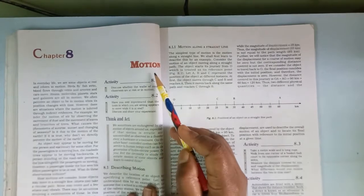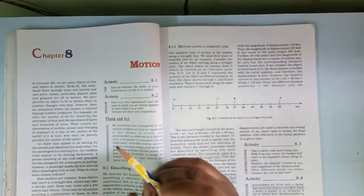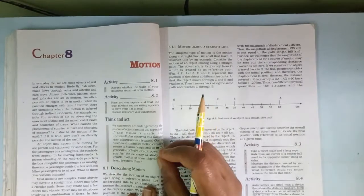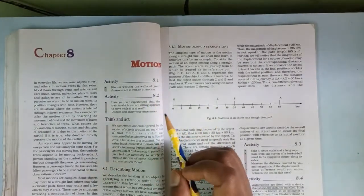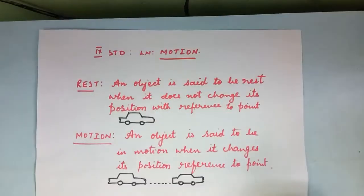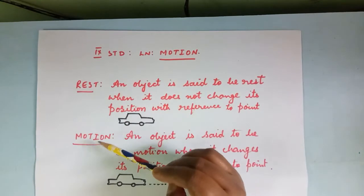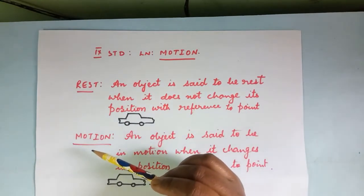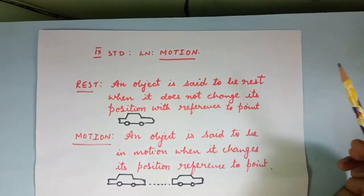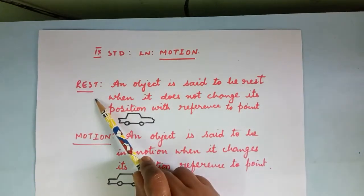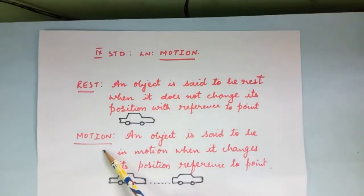Before going to the detail of this motion, let us try to know the fundamental meaning related to the motion chapter. So this is 9th standard motion lesson. Two important terms we need to be knowing before going to the detail of the chapter. What is the meaning of rest and what is the meaning of motion?